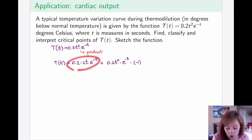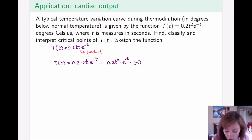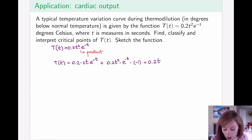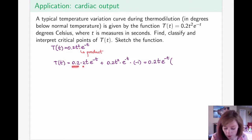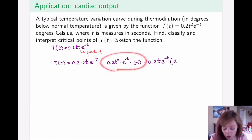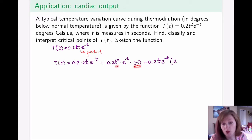To better see what's going on, we simplify by factoring. Both terms share a factor of 0.2, a factor of T, and a factor of e^(−T). Factoring those out, from the first term we have 2 remaining, and from the second term we have −1 times T remaining, giving us 2 − T inside the brackets. So f′(T) = 0.2 · T · e^(−T) · (2 − T).